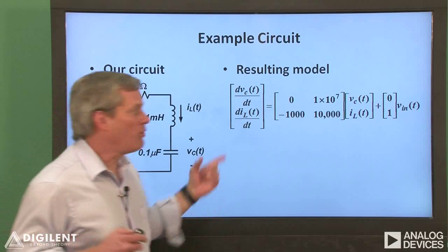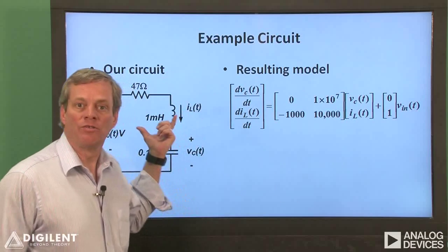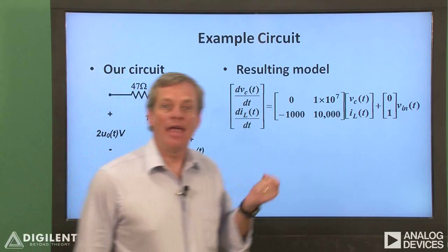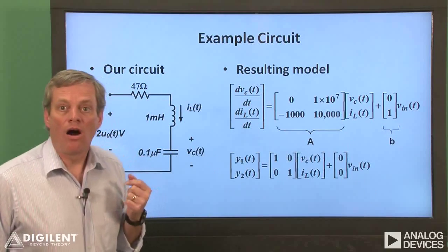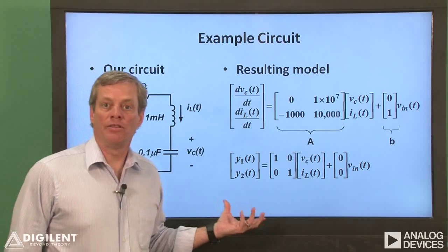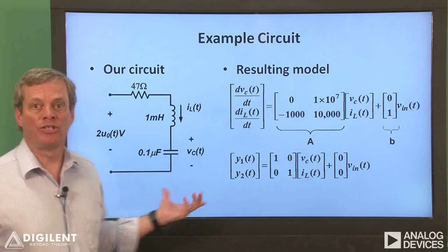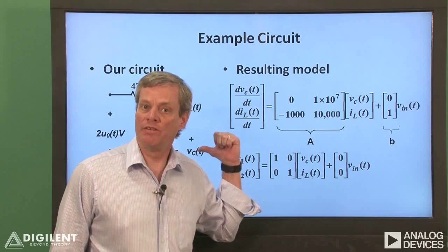Here are state equations for these particular values of resistance, inductance, and capacitance. Our A and B matrices are here and here. Our output equations are not dependent upon the circuit element parameters, so they're just the same equations that we showed on the previous slide.